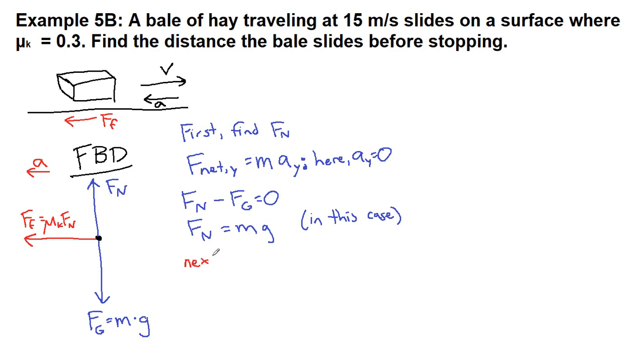The next thing we want to do is find the acceleration. And that's going to be looking at the net forces in the x direction. And what we have been training ourselves to do is to take the forces in the direction of acceleration, in this case friction, minus the forces opposite the direction of acceleration. There are no forces here. So it's just ma. So f friction equals ma.